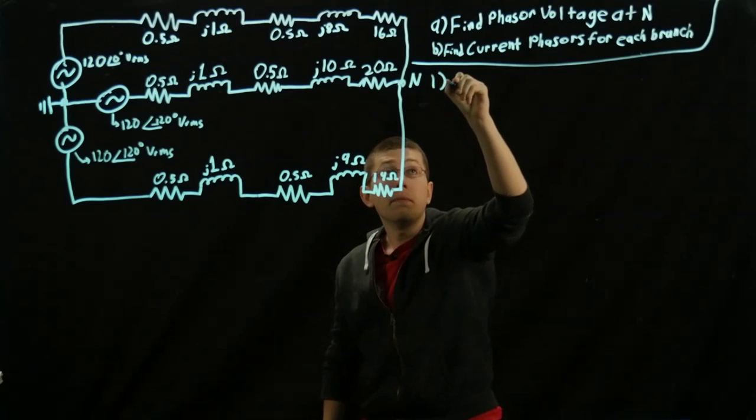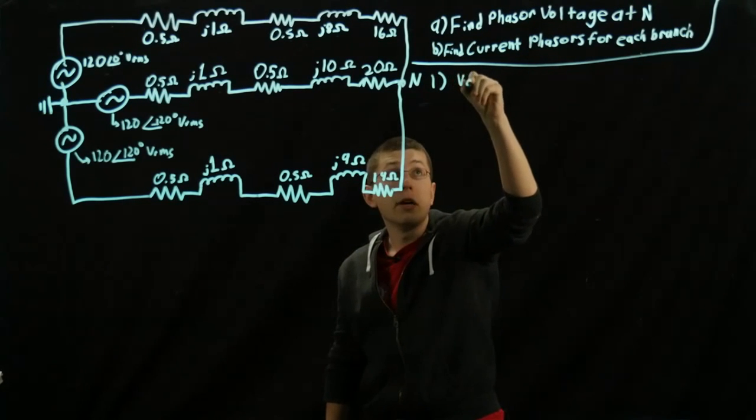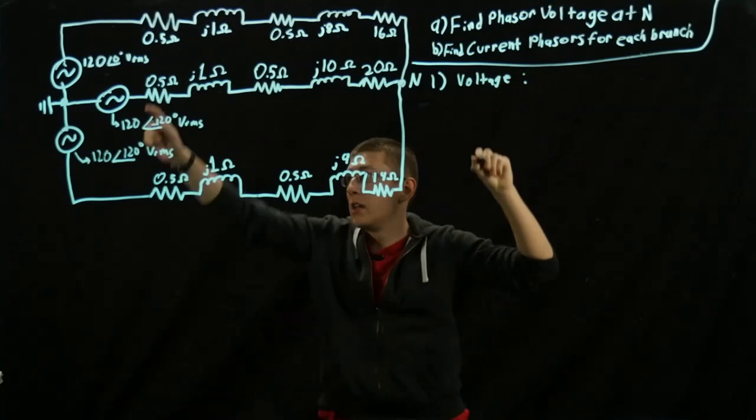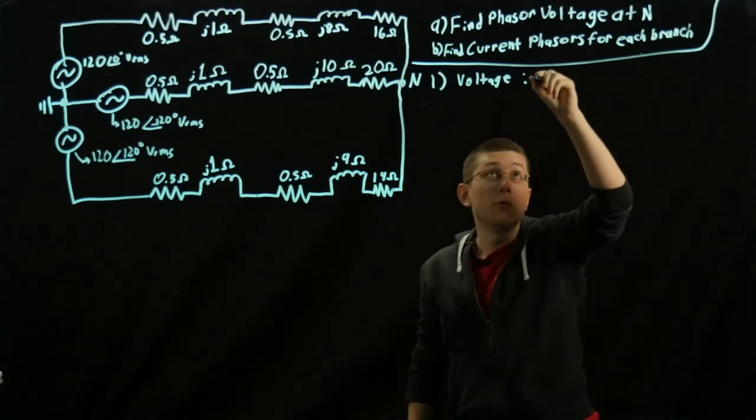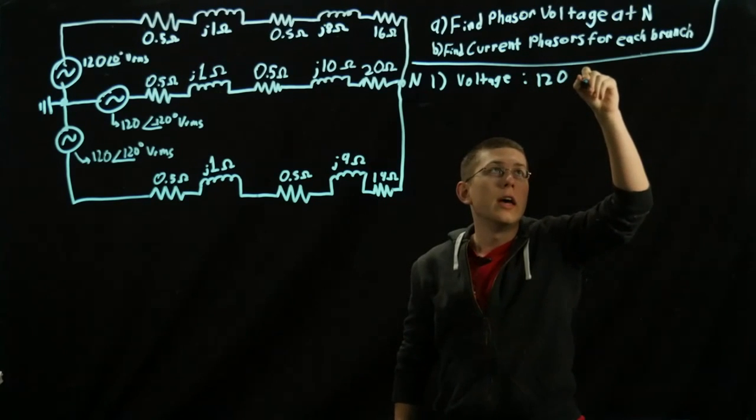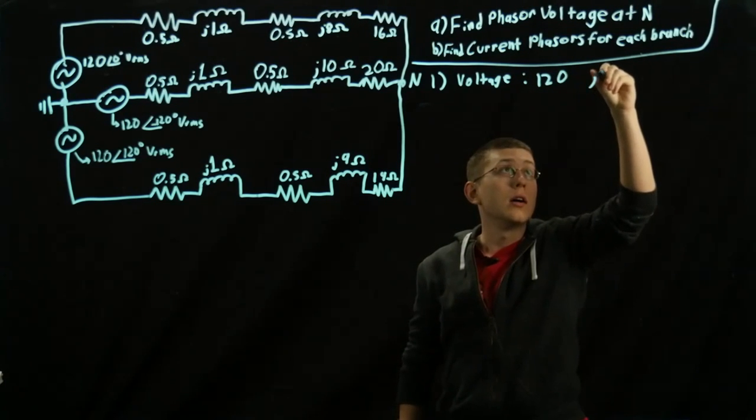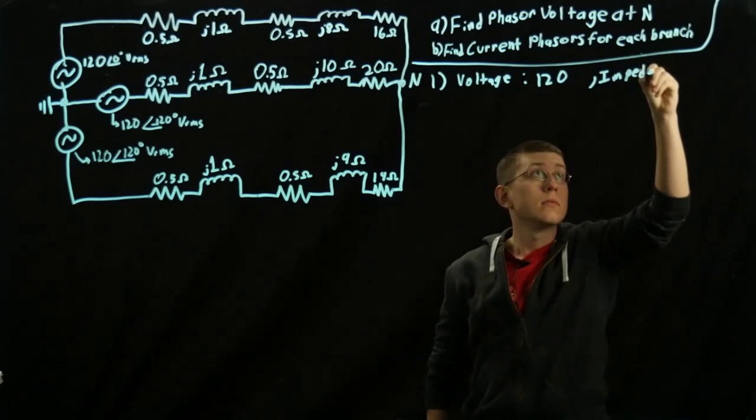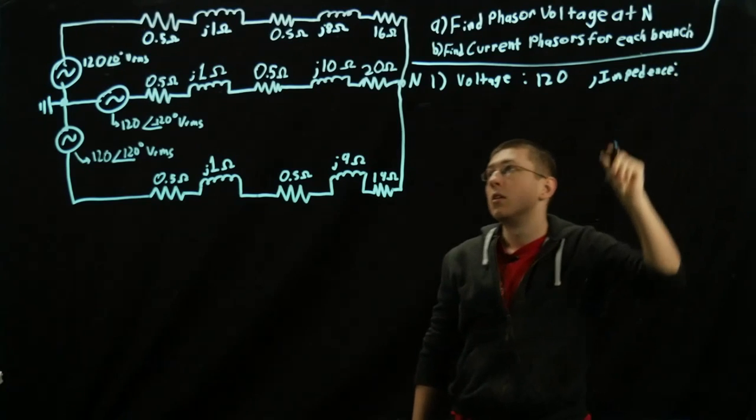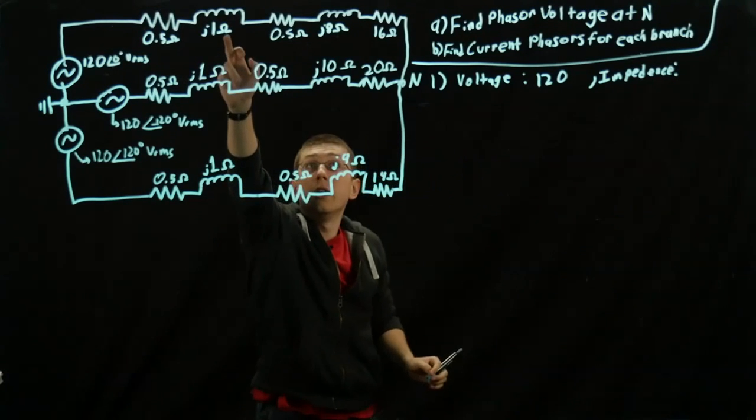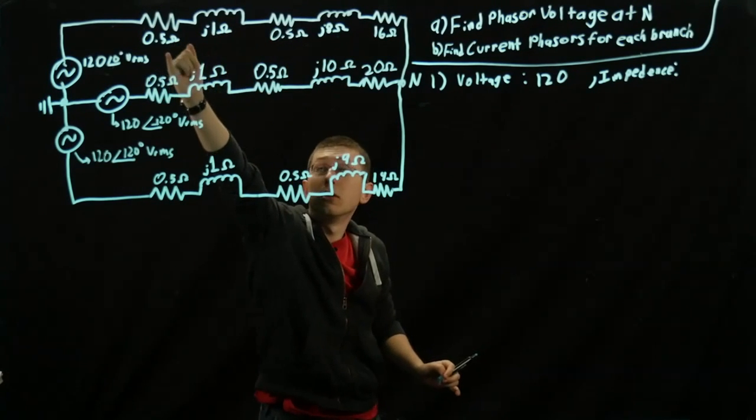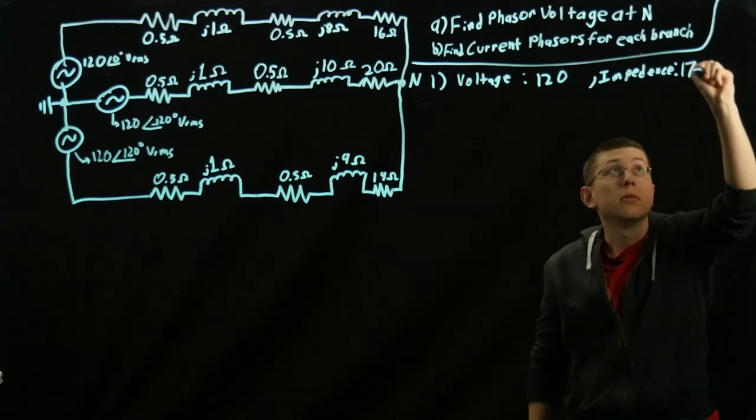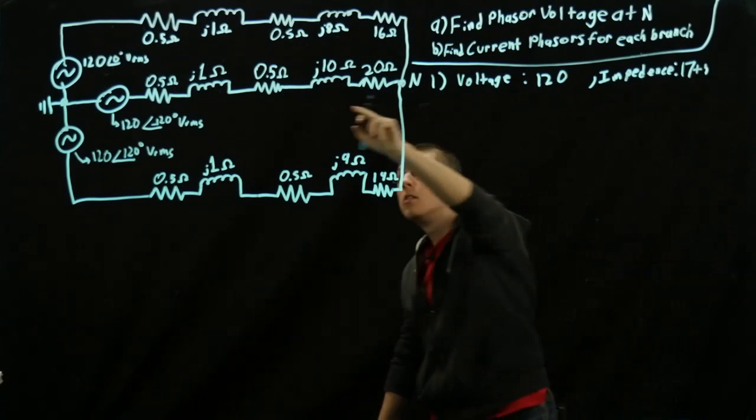For one, our voltage is just 120 volts because it's not phase shifted at all. So it's just 120 plus J0. And our impedance is 0.5, 0.5, 16. So 17 plus J9.